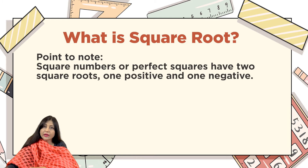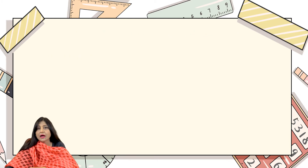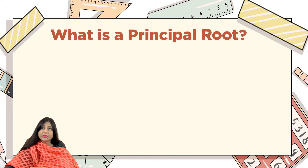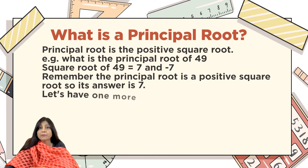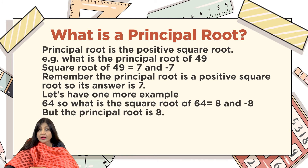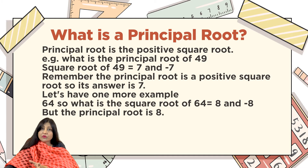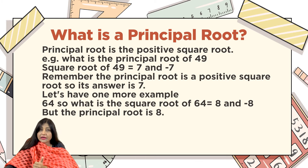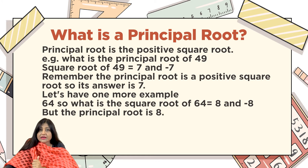The principal root is the positive square root — this is very important. For example, what is the principal root of 49? First, the square roots of 49 are 7 and −7. Since the principal root is the positive square root, the answer is 7, not −7.